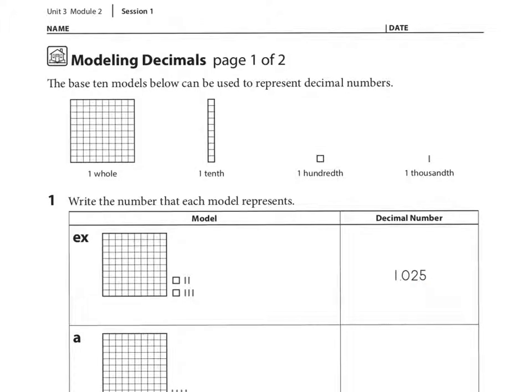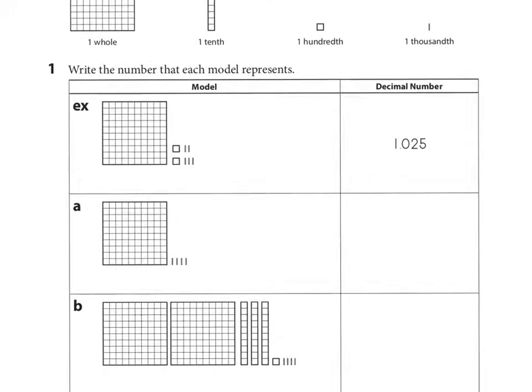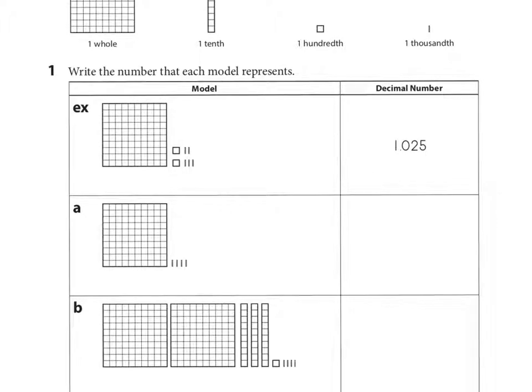Let's try number two, or I guess one a. Here we see one whole and four thousandths. These symbols right here represent thousandths. So how do we write that as a decimal? It's going to be one whole and four thousandths, like this. We can even write up here, one thousandth looks like this as a decimal. One hundredth looks like this. And one tenth looks like this. That might help you a little bit.